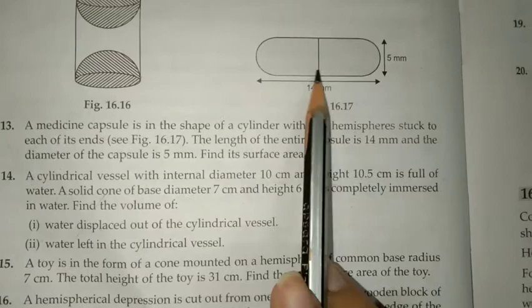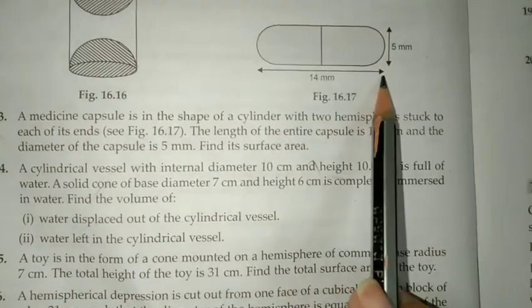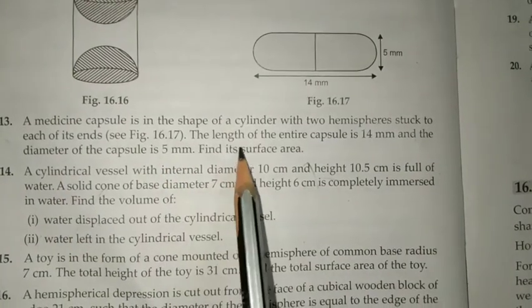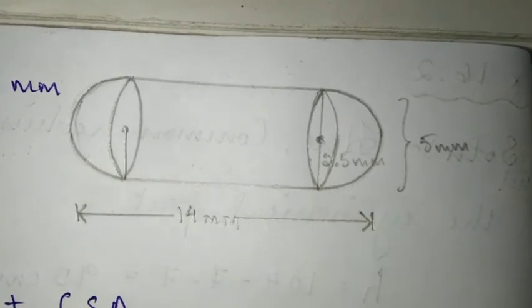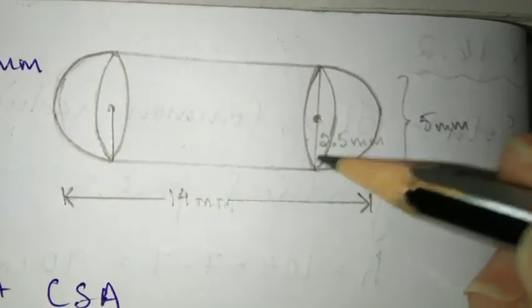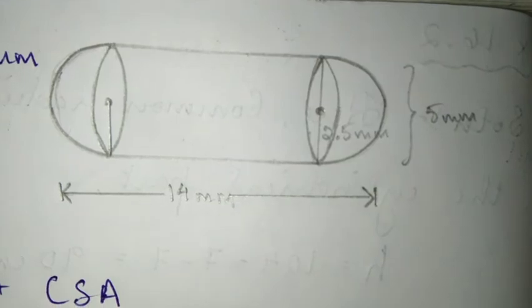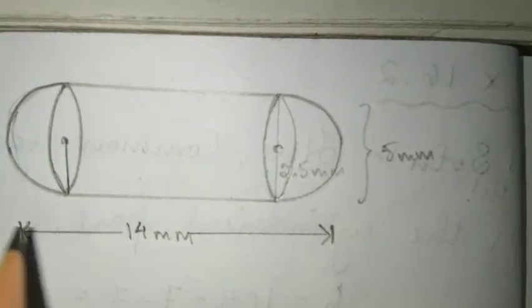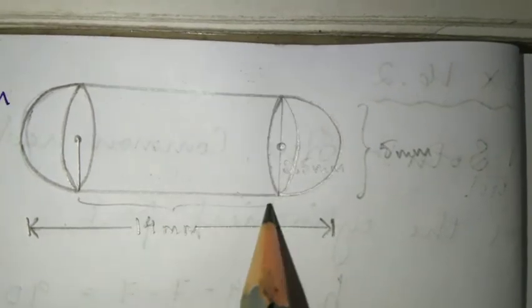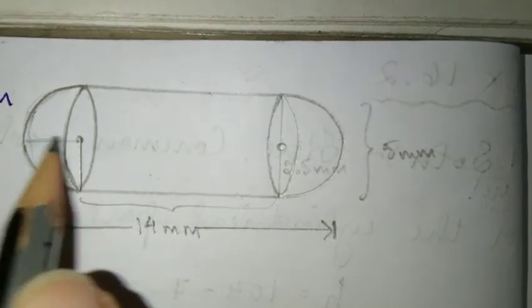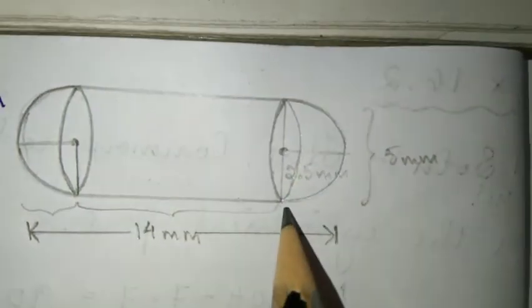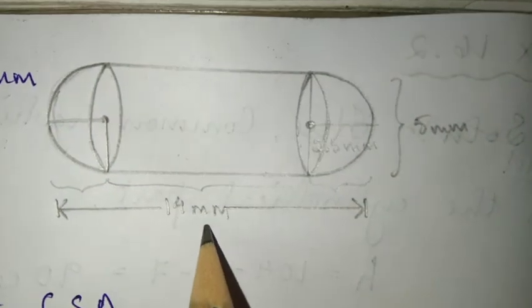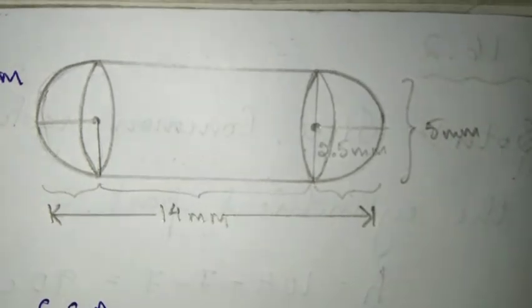There is a cylinder with hemispheres on each end. The diameter is 5mm. The entire length is 14mm. For the height of the cylinder, we subtract the two radii of 2.5 each from 14mm, so height equals 14 minus 2.5 minus 2.5.